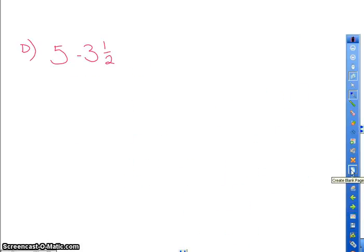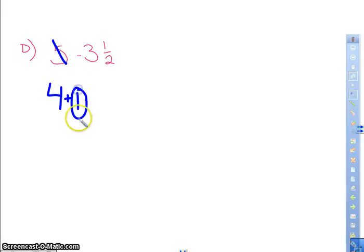Now I have 5 minus 3 1/2. Well, just like before, we need to get a common denominator. And what I can do is I can change 5 to 4 and pull 1 out of it. So 4 plus 1 is the same thing as 5. Now this 1 I'm going to rewrite as a fraction. And the fraction I'm going to rewrite it as is going to have a denominator of 2. Now we know that 2/2 is the same as 1. And the reason we choose 2/2 is because 2 halves is the same thing as 1 whole.